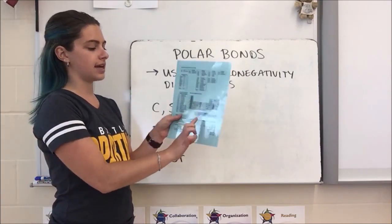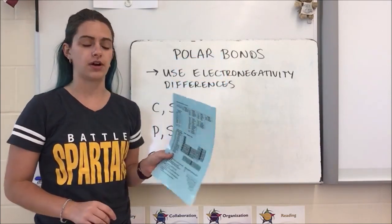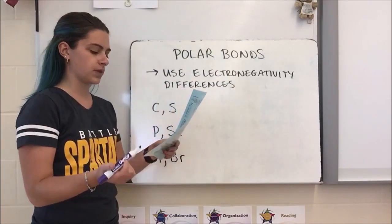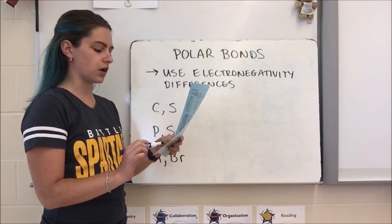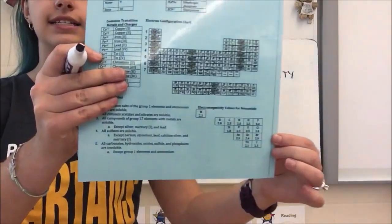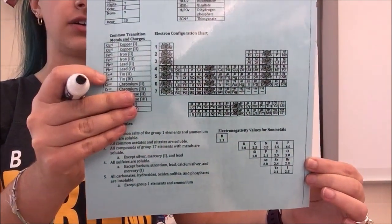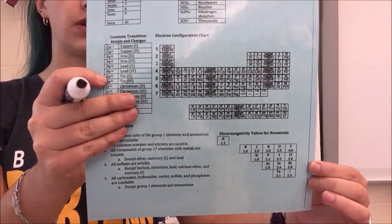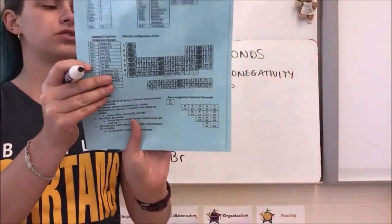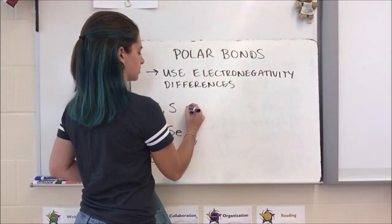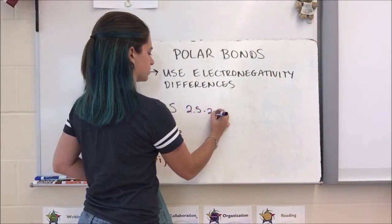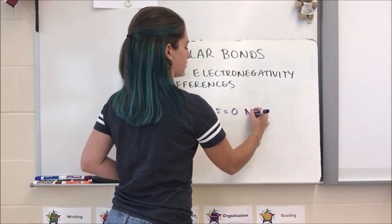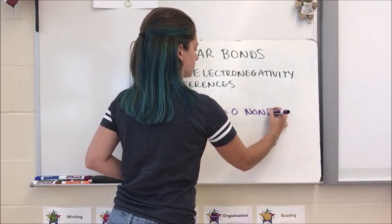Our first example is carbon and sulfur. If I look up carbon and sulfur on my table, the electronegativity value for carbon is 2.5 and for sulfur is also 2.5. If I subtract those two numbers, 2.5 minus 2.5, I get a difference of zero, which means that this is a nonpolar bond. Carbon and sulfur have an exactly equal pull on the electrons in that bond.